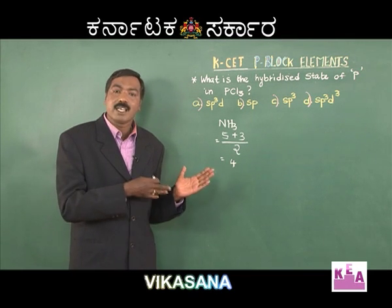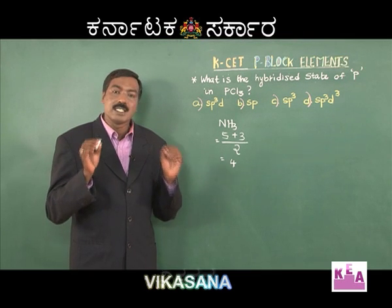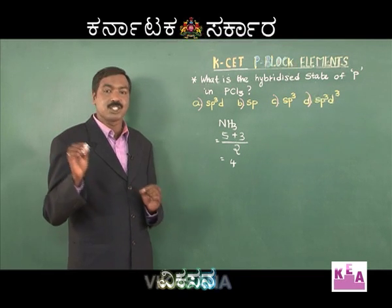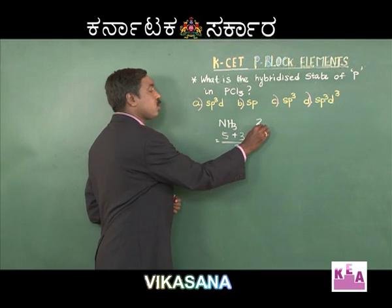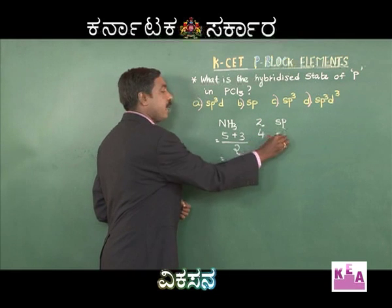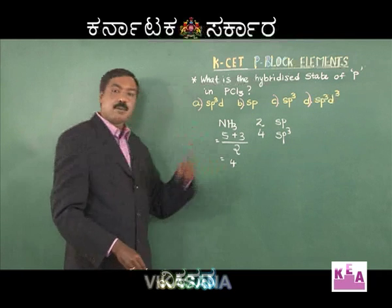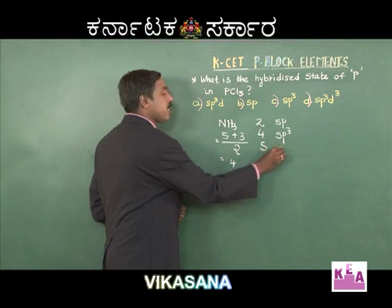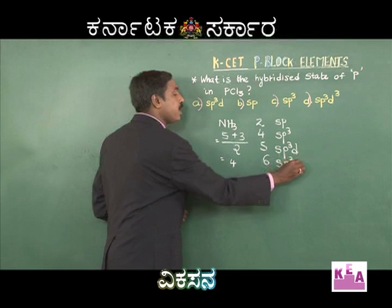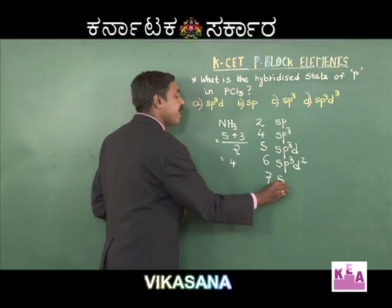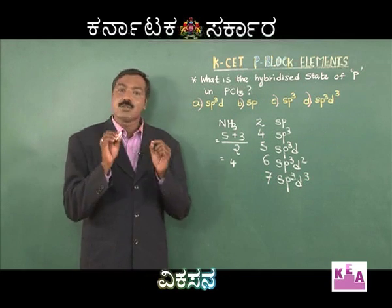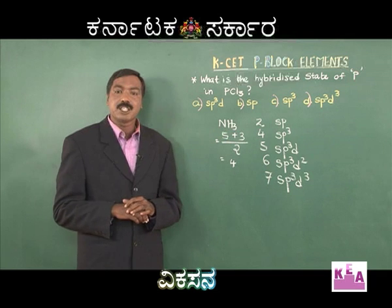Students, learn this concept: if you know this number, you can easily predict the hybridization state. If the number is two, hybridization is sp. If it is four, the hybridized state is sp3. If it is five, hybridization is sp3d. If it is six, hybridization is sp3d2. If it is seven, hybridization is sp3d3. For ammonia, the answer is four, so it is sp3 hybridization.